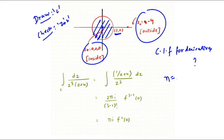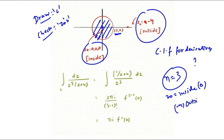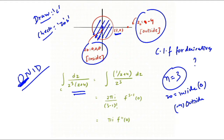The power n = 3 applies to z = 0 which is inside, while z = −4 is outside. So we use the partial fraction (on-id) technique first to separate them. Whatever singularity is outside goes into the numerator as f(z), and whatever is inside stays in the denominator. So f(z) = 1/(z + 4), and the denominator becomes (z − 0)³.